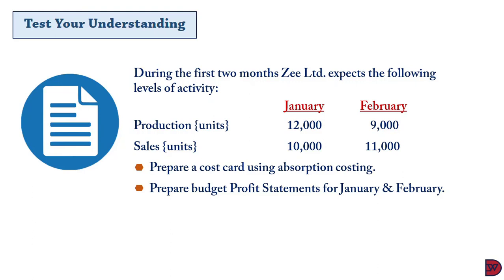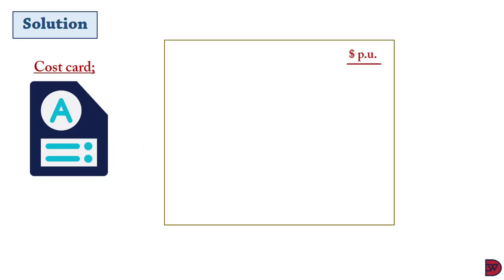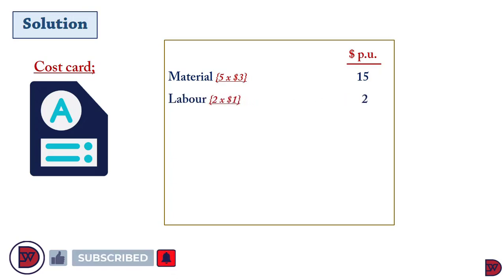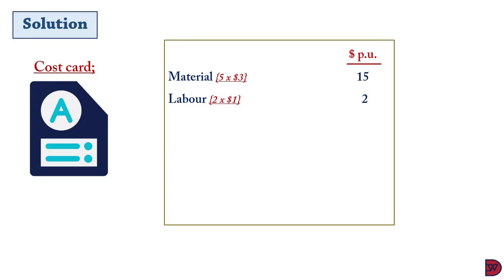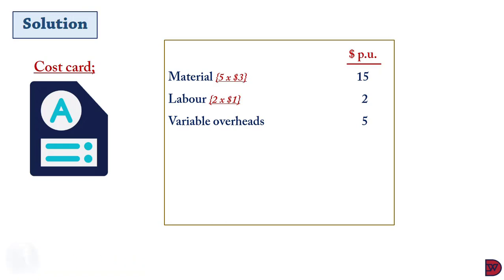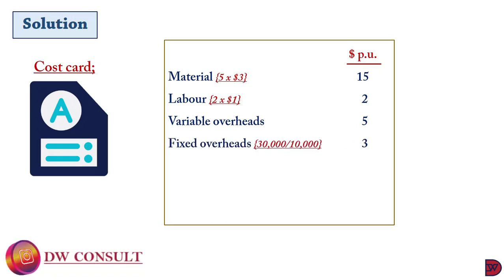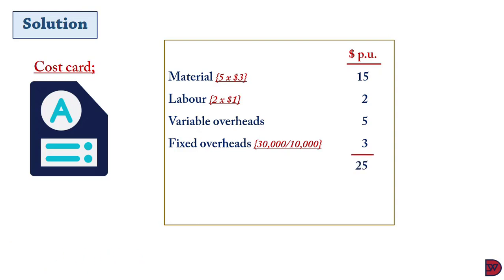For the solution, the cost card starts with cost per unit. Material: five meters of paper at three dollars each gives fifteen dollars. Labor: one dollar per hour for two hours gives two dollars. Variable overhead: five dollars as stated. Fixed overhead: thirty thousand dollars divided by ten thousand budgeted units gives three dollars per unit. Total cost of the book is twenty-five dollars. The book sells at thirty-five dollars, so the standardized gross profit is ten dollars per unit.